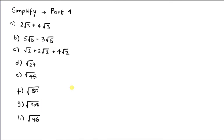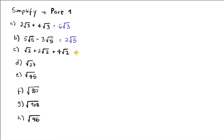Now looking at further examples with simplification. For addition: 2√3 + 4√3 — same radical, so I add the coefficients: 2+4 = 6, giving 6√3. Similarly, 5√5 − 3√5 = 2√5. And for √2 + 2√2 + 4√2 — same radical again, so 1+2+4 = 7, giving 7√2.